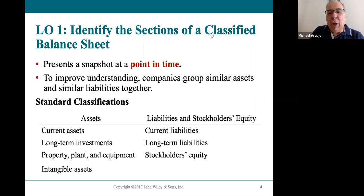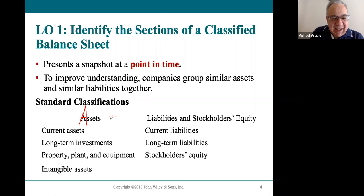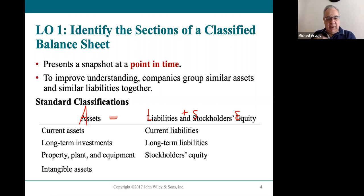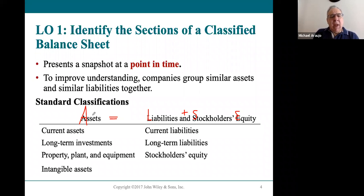You already know how a balance sheet works. You have assets on one side, and they equal liabilities plus stockholders' equity. That is the balance sheet equation, or the accounting equation, that you've become familiar with — a very important equation you're going to be seeing and using over and over again. These are basically what's on the balance sheet: assets on one side, liabilities and stockholders' equity on the other side.